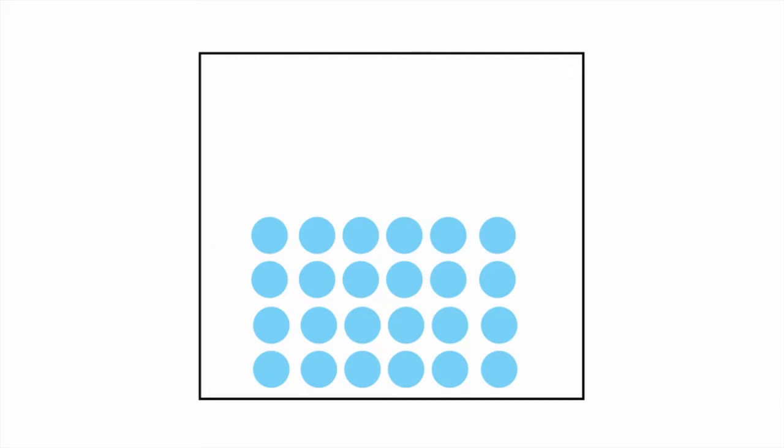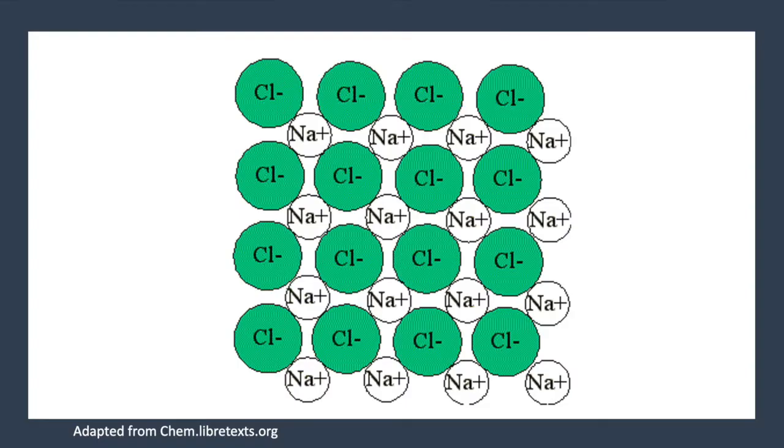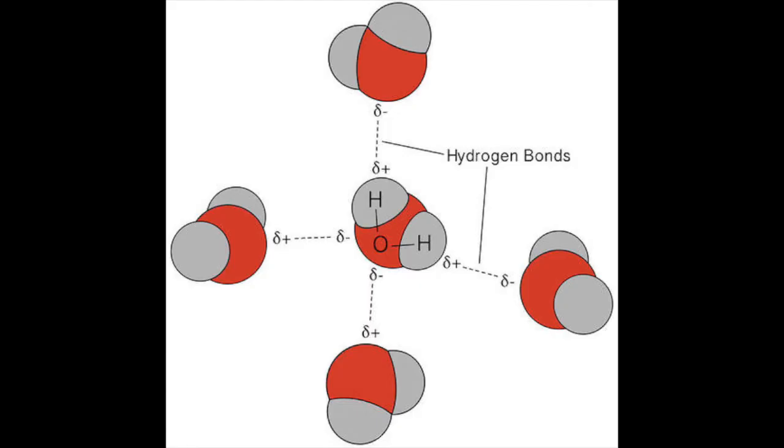If you're looking at ionic solids, you're going to want to alternate positive and negative charges. And if you're working with polar molecules, you're going to want to arrange them in such a way that partial negative charges are oriented towards partial positive charges.